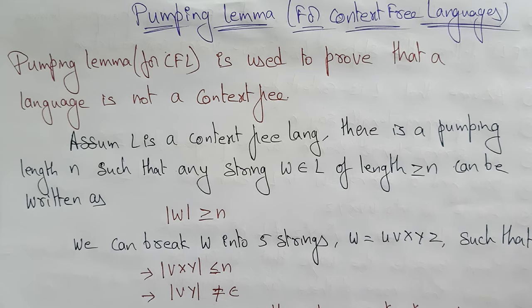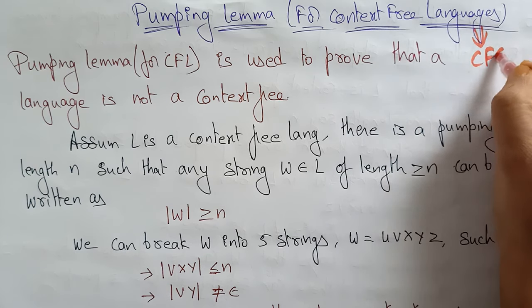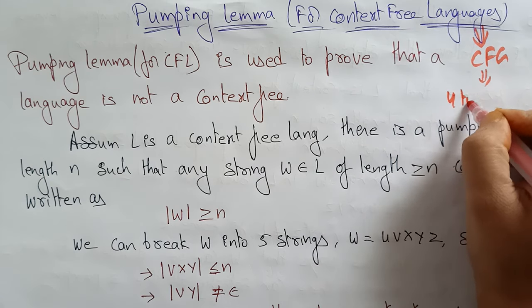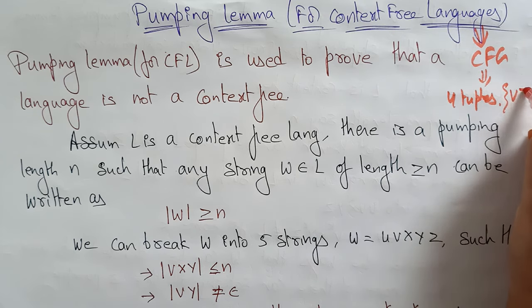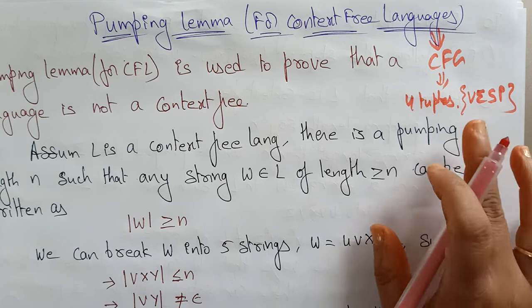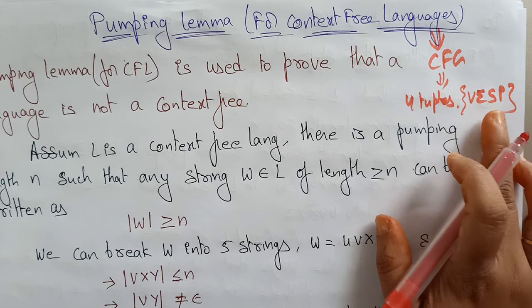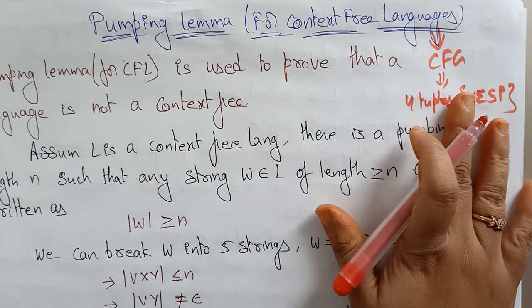A context-free language is a language which is generated by a context-free grammar. A context-free grammar consists of four tuples: V, Σ, S, P — where V is the set of non-terminals, Σ is the set of input symbols, S is the start symbol, and P is the set of production rules.